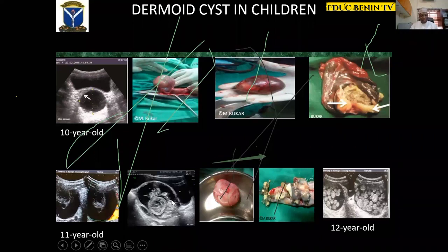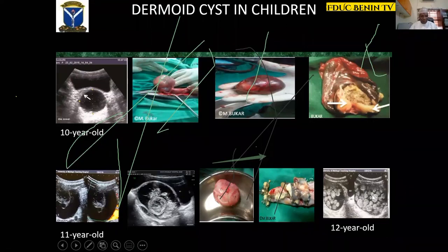Somewhere here you can see a dot-dash pattern meshed within a less echogenic area — this is fat with hair. You can see the follicles, ovarian tissue, and between the follicle and the cyst a halo, suggesting it would be easy to tease out this ovary at surgery. This is called a dermoid ball — it is a rare ultrasound manifestation of dermoid cysts and is pathognomonic of dermoid cysts.